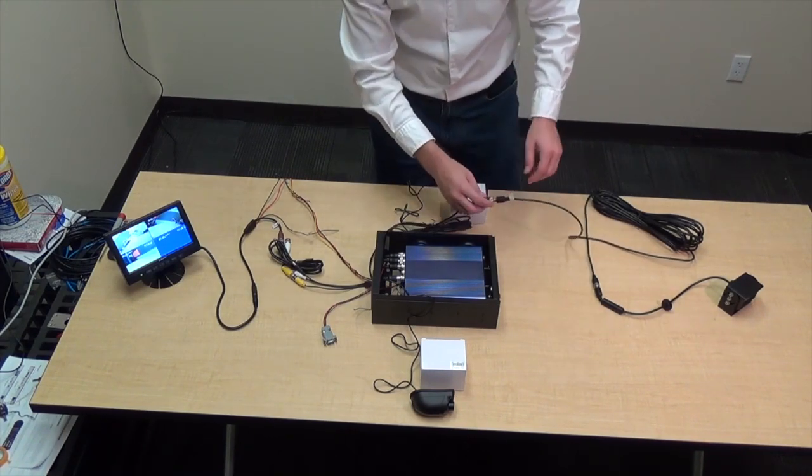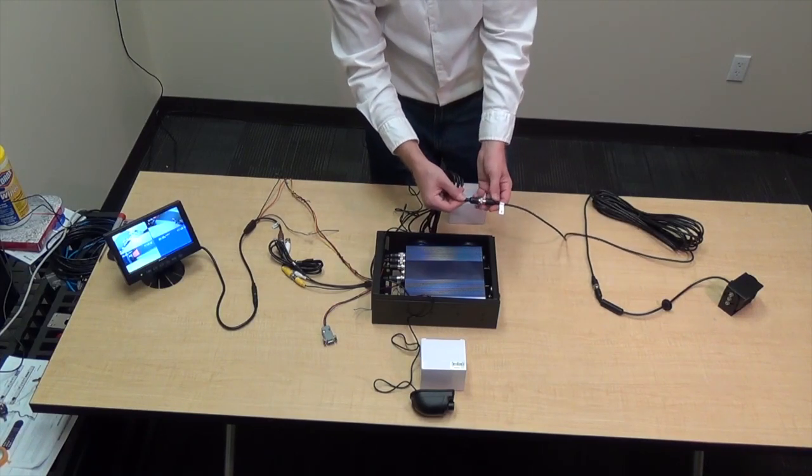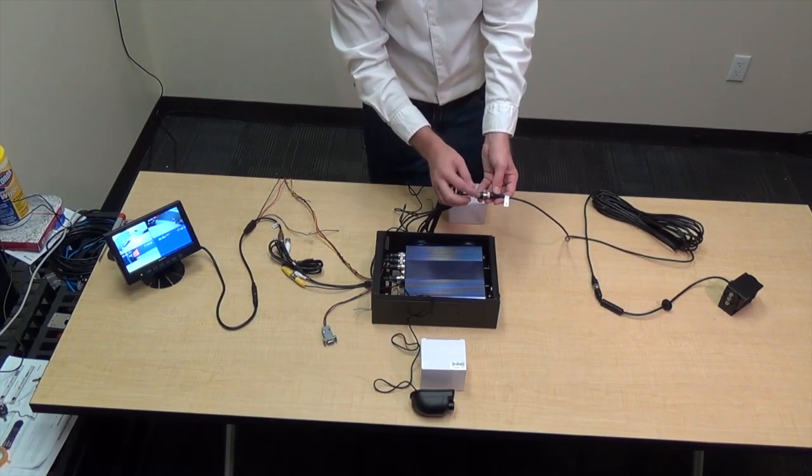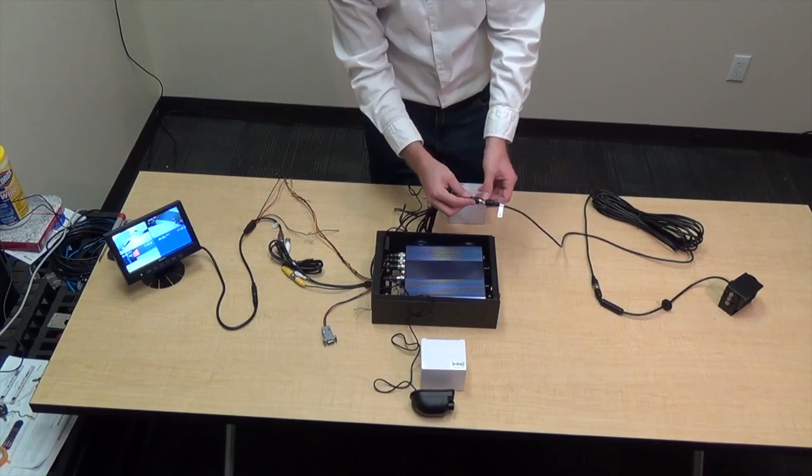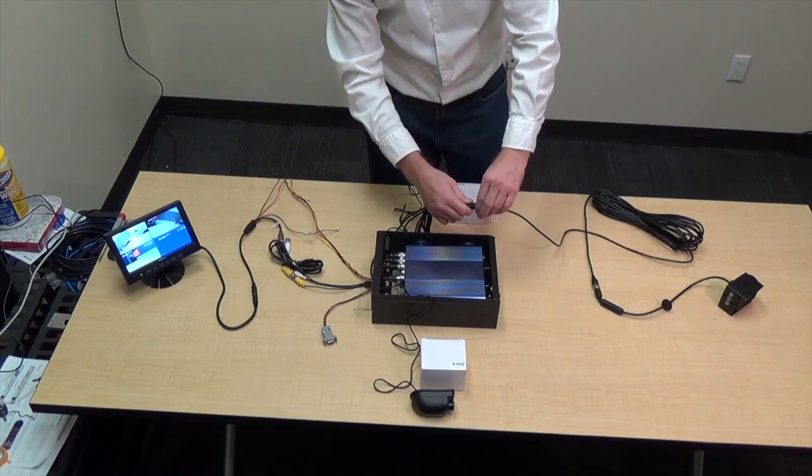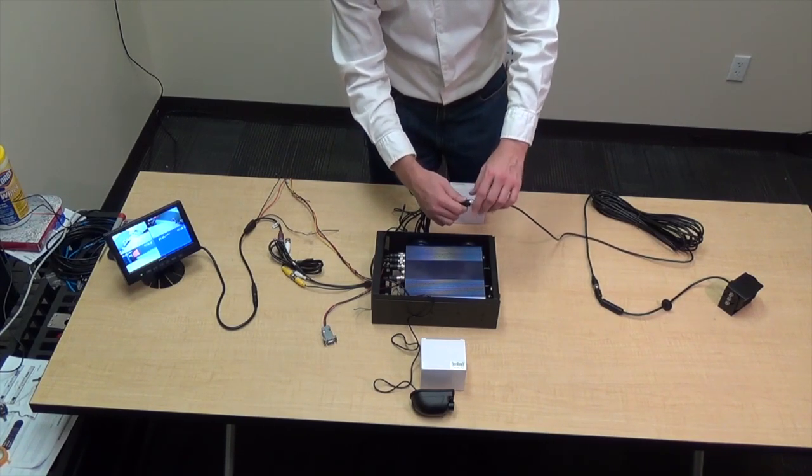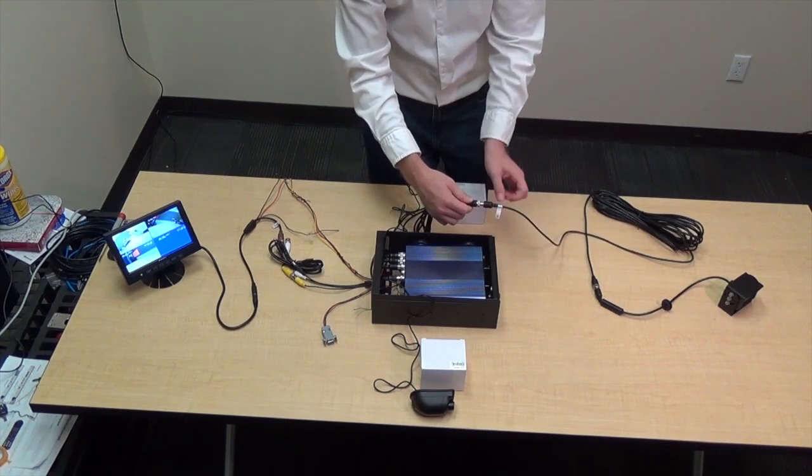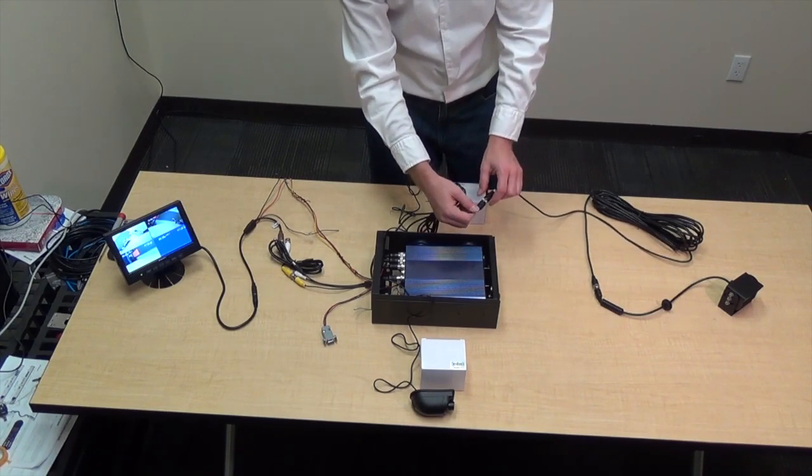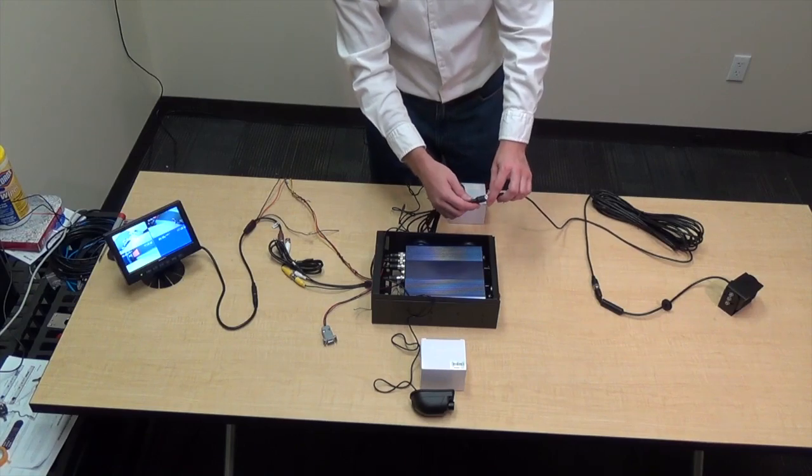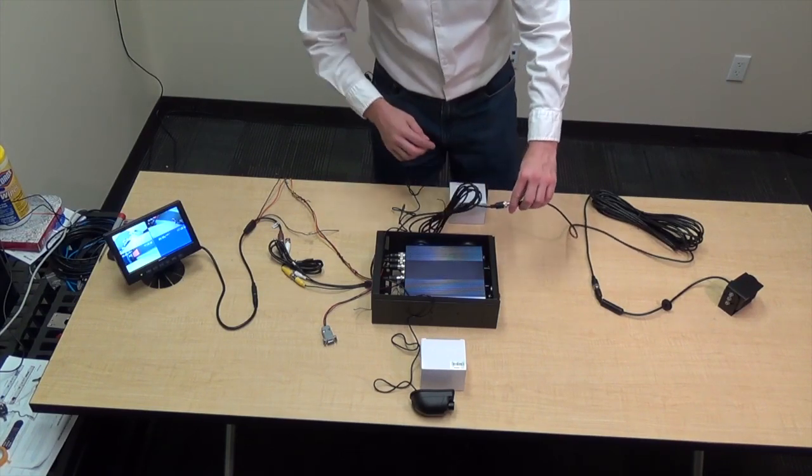Also all of the cameras as well as the DVR use this 4-pin locking connector which combines audio, video, and power all onto one wire that mechanically screws down so you get a nice strong connection and also makes the footprint of the cable very thin so it's easier to run around trim panels and floor mats and things like that.